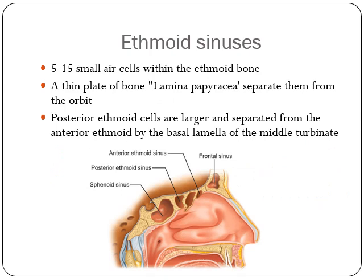The ethmoid sinuses consist of 5 to 15 small air cells within the ethmoid bone. A thin bone called the lamina papyracea separates them from the orbit. Posterior ethmoid cells are larger and separated from the anterior ethmoid cells by the basal lamella of the middle turbinate.